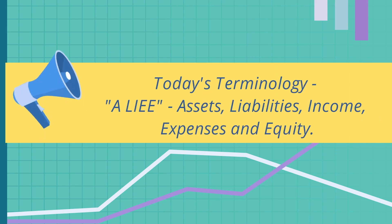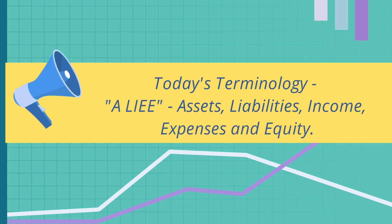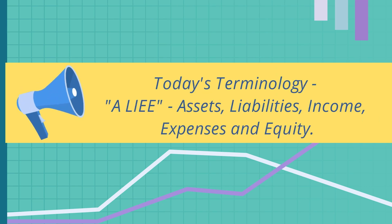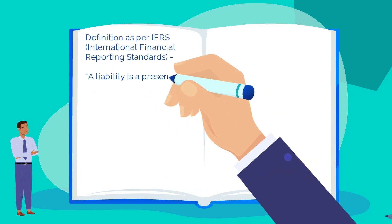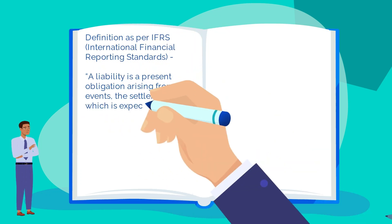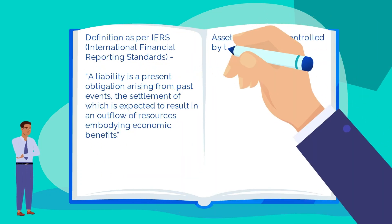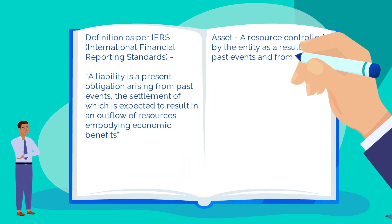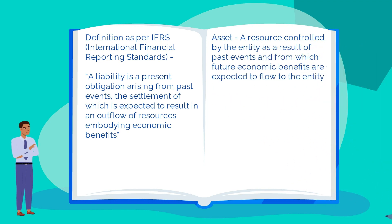Now, we will learn assets, liabilities, income, and expenses by centralizing. Definitions from IFRS are a bit complicated to understand, and hence let us use a simple example to break down elements of accounting.